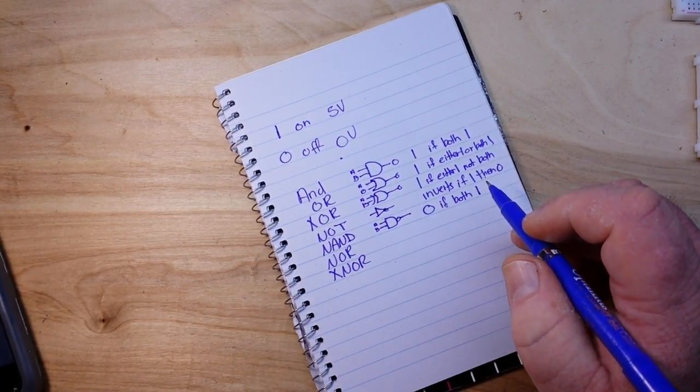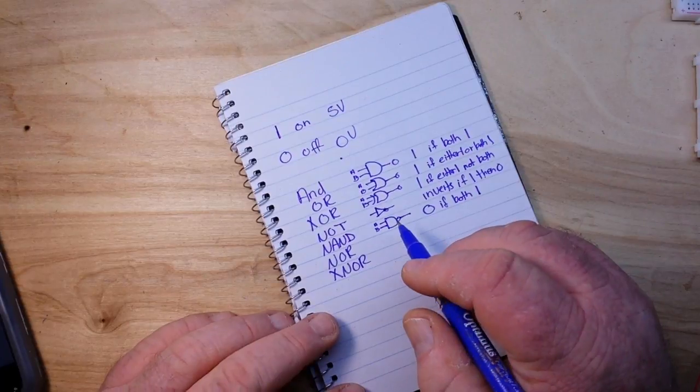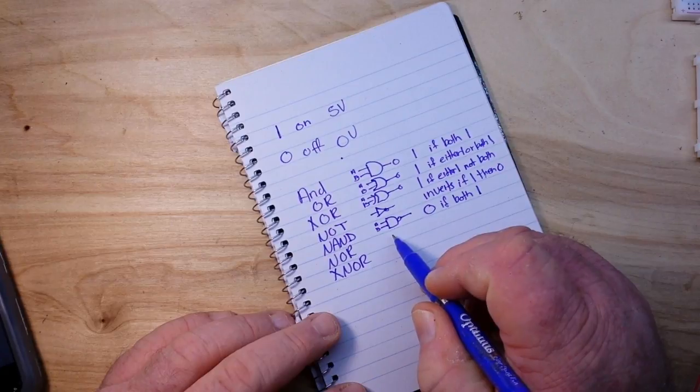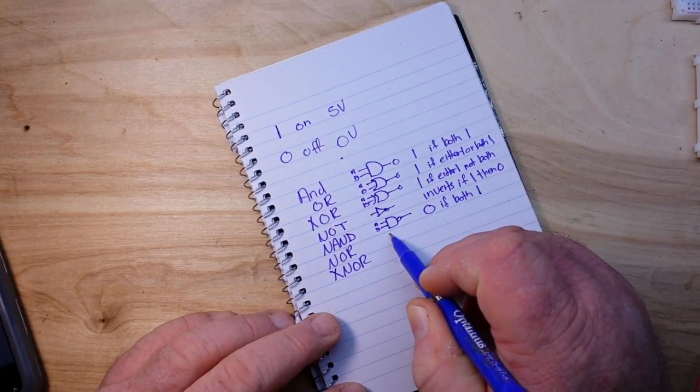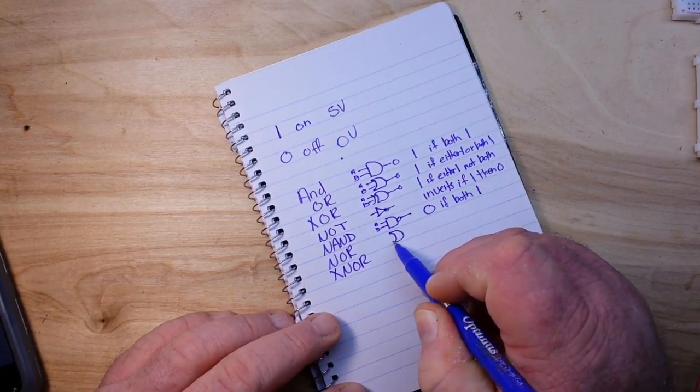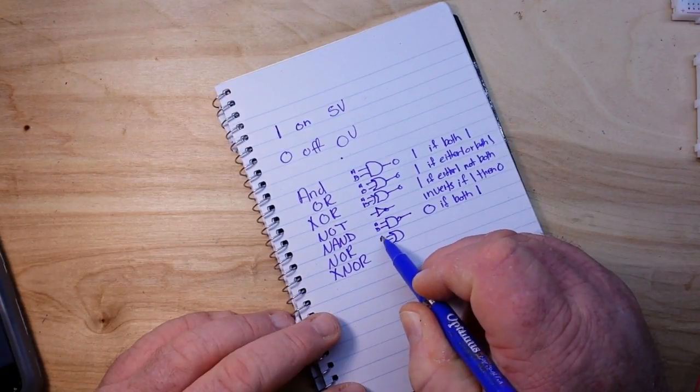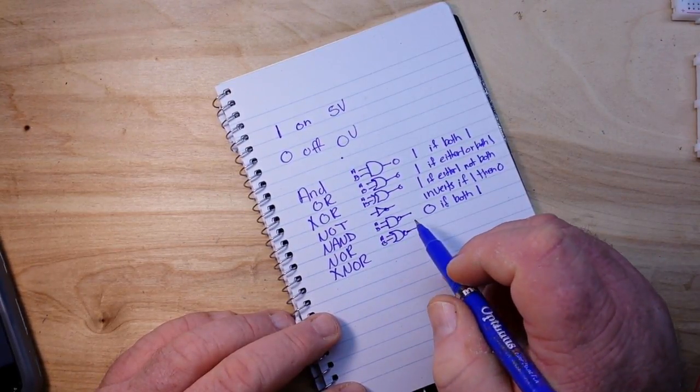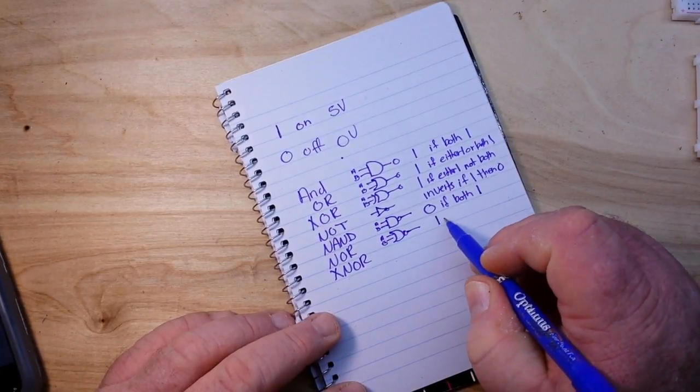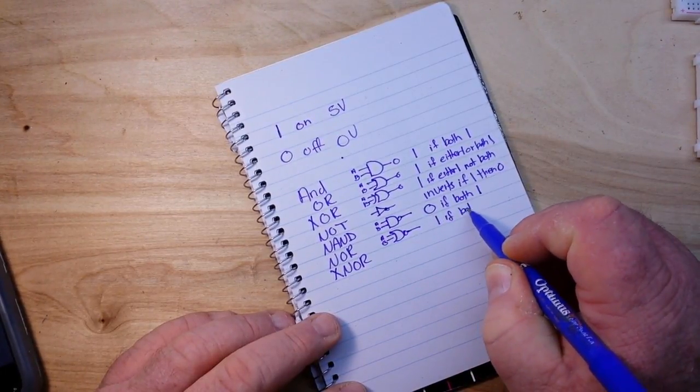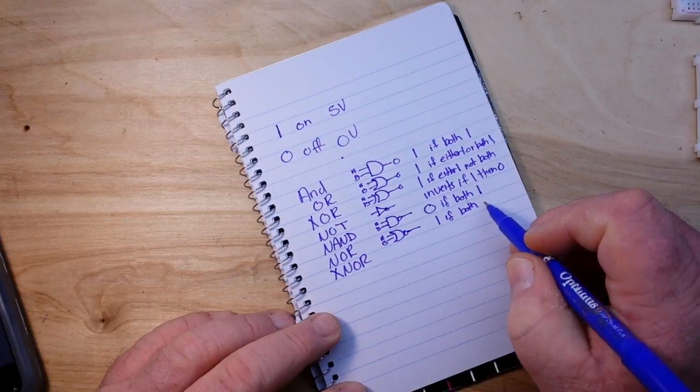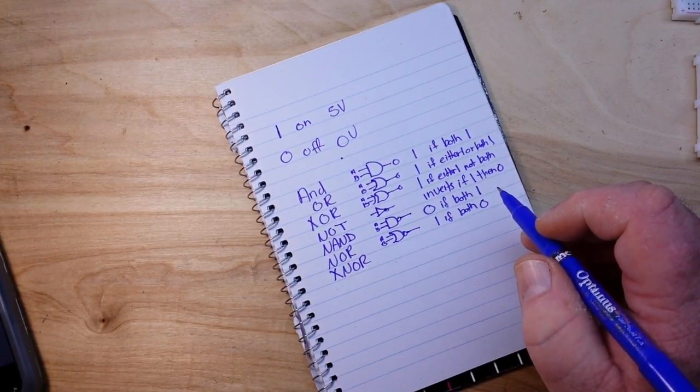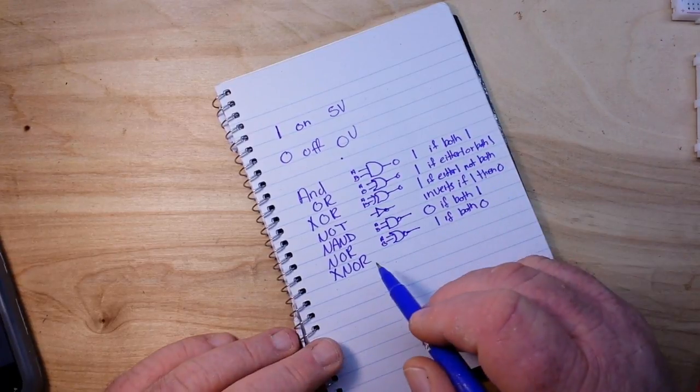Next we have the NOR gate which is a combination of the OR and the inverter. The NOR gate: the output is true if both are false.